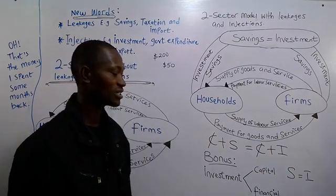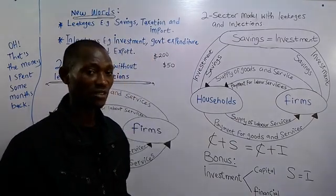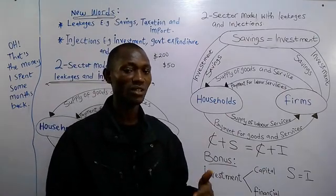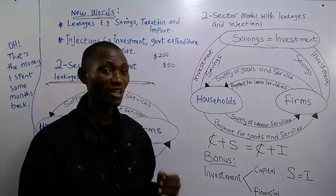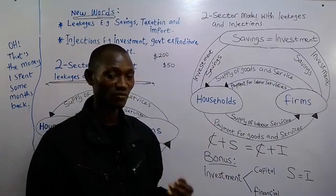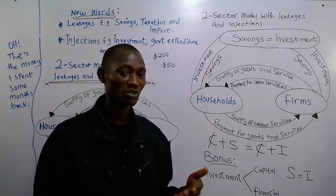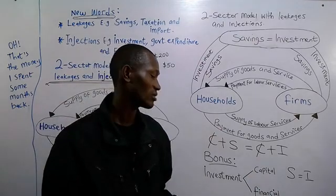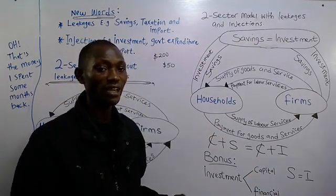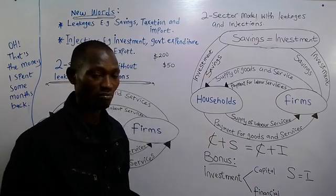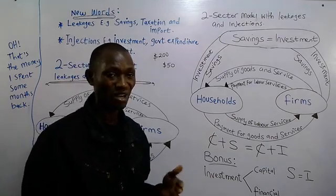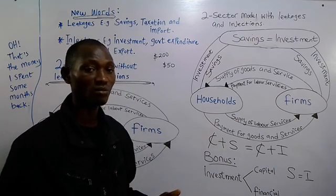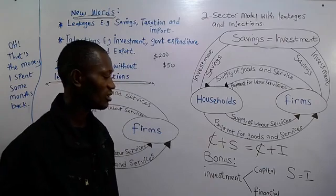The second type is financial investment, which is usually made by private individuals. It involves human capital development — investing in yourself in terms of acquiring education, skills, and training — because that education and training will continue to yield future benefits for years to come. When you enroll for a four-year college degree, that's financial investment. Financial investment could also involve buying securities such as shares, bonds, and gilts, primarily to receive dividends at the end of the financial year when the company makes profits.